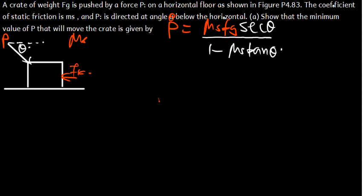As we can see, we have the diagram here. We have been told that there is static friction, meaning this object is not moving. Whenever we have static friction, the object is not moving, meaning we can say that the summation of all the forces in the x-direction, when we add them, is supposed to give us zero.